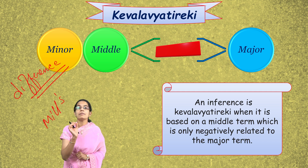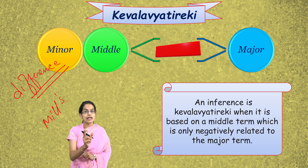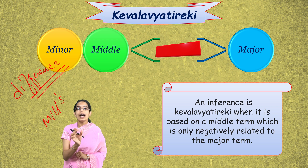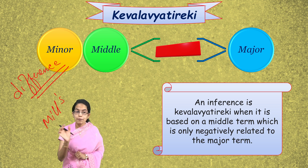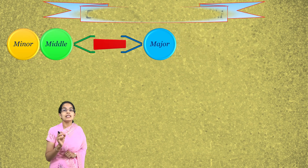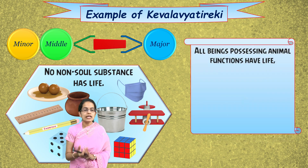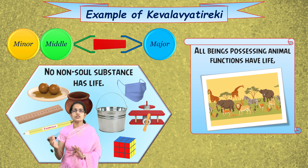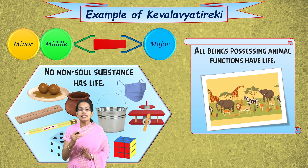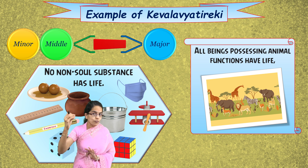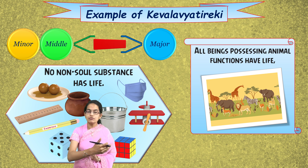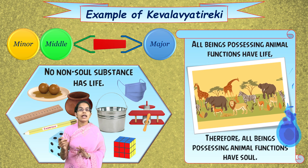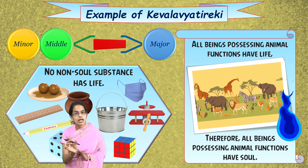Under Kevalya Vyatireki, the agreement of absence applies. For example: 'No non-soul substance has life' — whatever substance does not have soul does not have life. This means animals have life, therefore animals have soul, which is what we infer. This uses negative sentences to establish the inference.